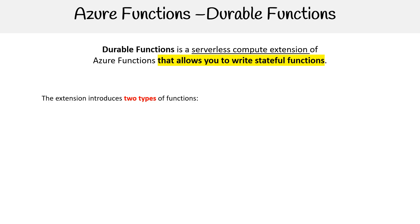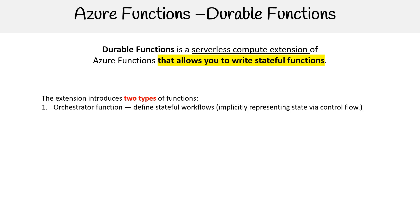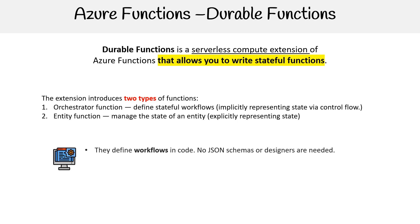The extension introduces two types of functions. We have orchestrator functions, which define stateful workflows implicitly representing state via control flow, and entity functions, which manage the state of an entity explicitly representing state. They define workflows in code, so no JSON schema or designers are needed.